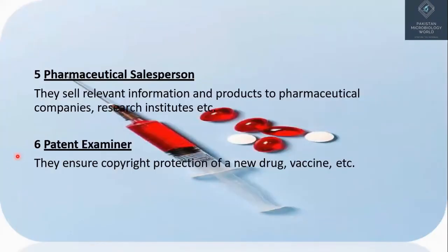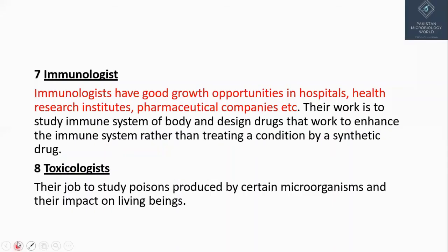Fifth is pharmaceutical salesperson. They sell relevant information and products to pharmaceutical companies and research institutes. Sixth is patent examiner. They ensure copyright protection of new drugs and vaccines.